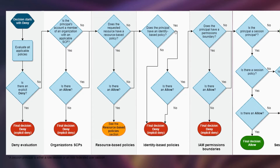If there is no identity-based policy, an implicit deny applies because the user doesn't have any permissions or policies attached. If there is an identity-based policy, it checks whether there is an allow. If there is no allow, it's also an implicit deny. If there is an allow, it then checks whether there is a permission boundary attached to the principal and whether that permission boundary has an allow.